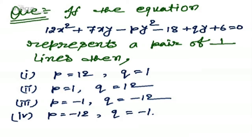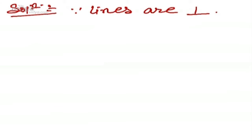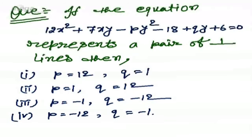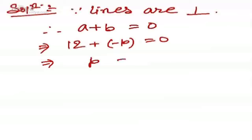For this question we use two conditions: when the equation represents a pair of straight lines (delta = 0), and when it represents a pair of perpendicular lines (a + b = 0). Since lines are perpendicular, a + b = 0. Here a = 12 and b = -p, so 12 + (-p) = 0, giving p = 12.